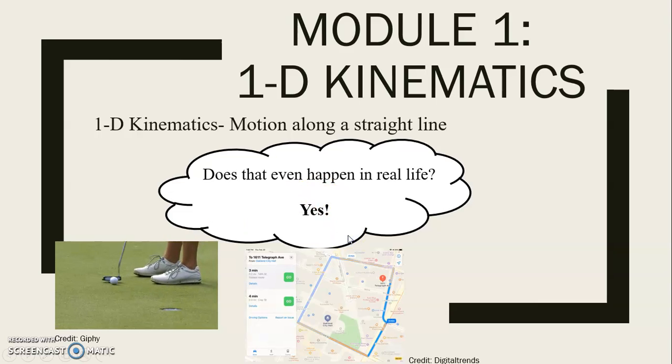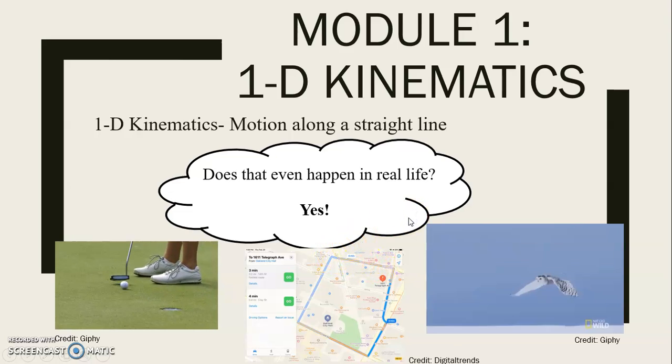When you're driving your car, there's lots of curvy roads, but there are also lots of straight roads. So there's plenty of times when you're in a straight path for a while, such as on this straightaway, and then you change direction. But now you're doing one dimensional motion again. Sometimes birds are soaring through the air in a straight path. Or for example, geese fly south for the winter.